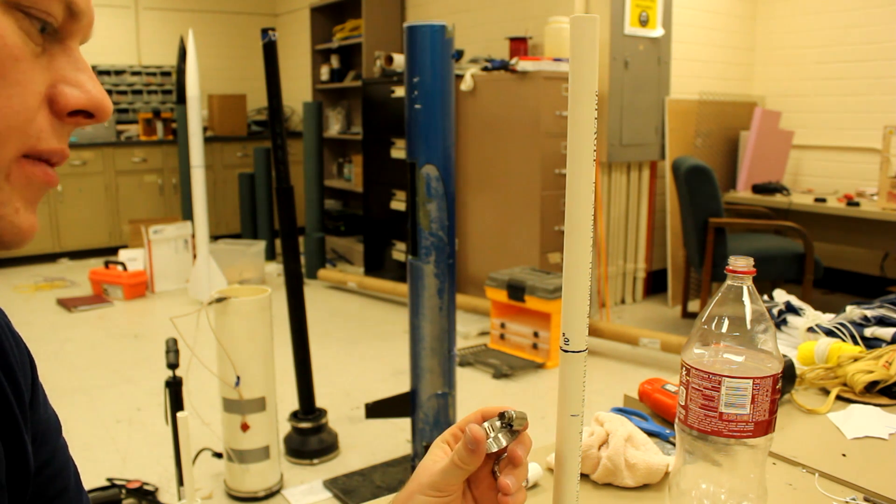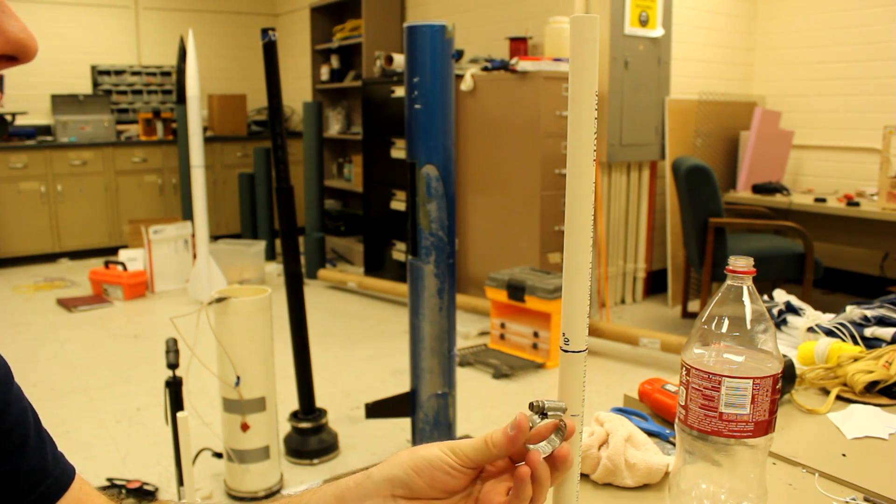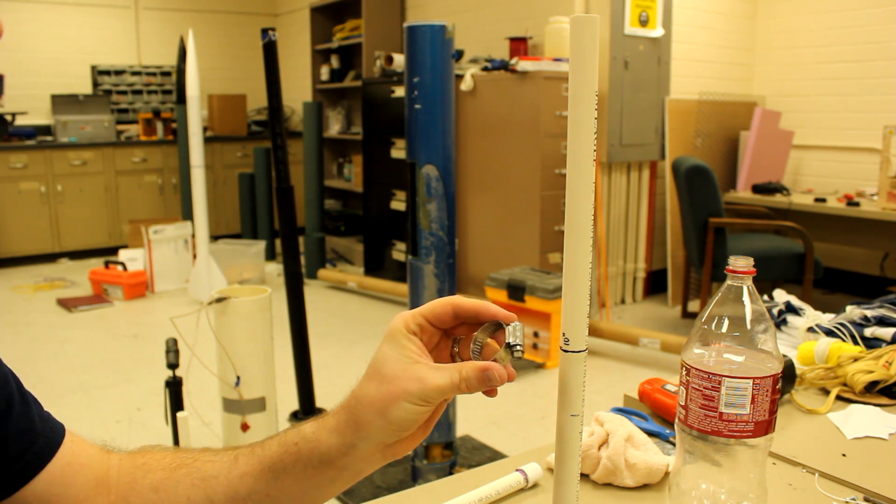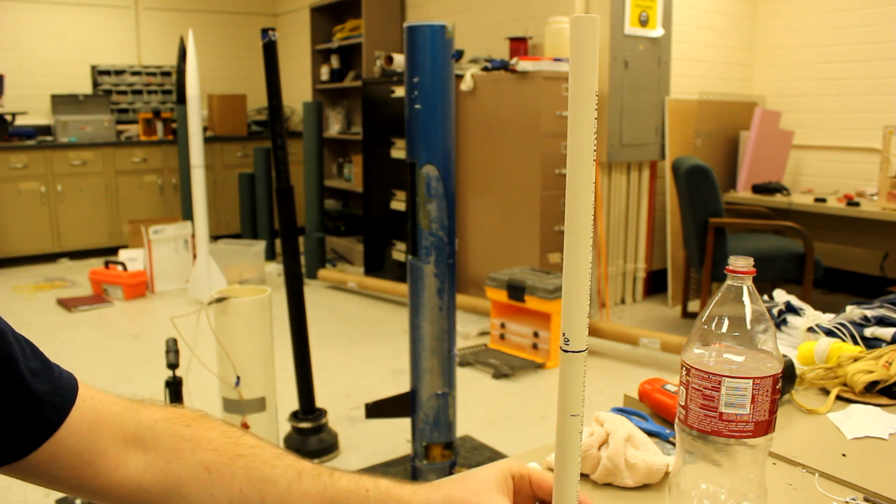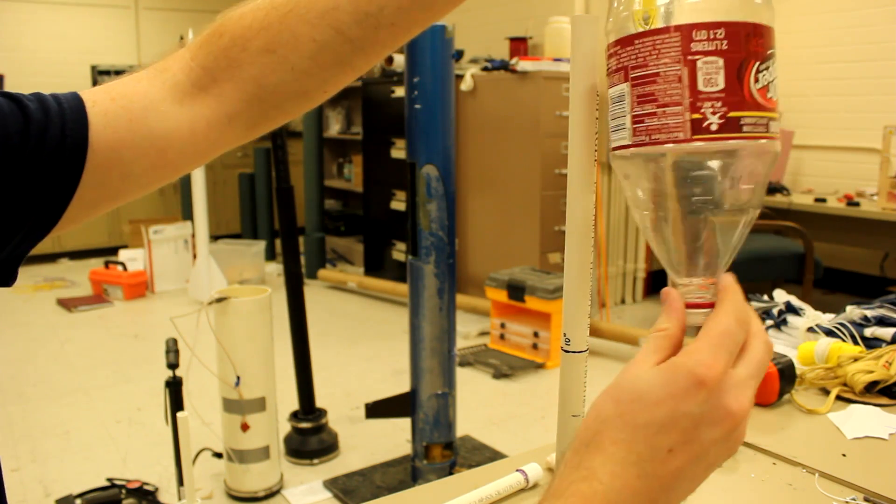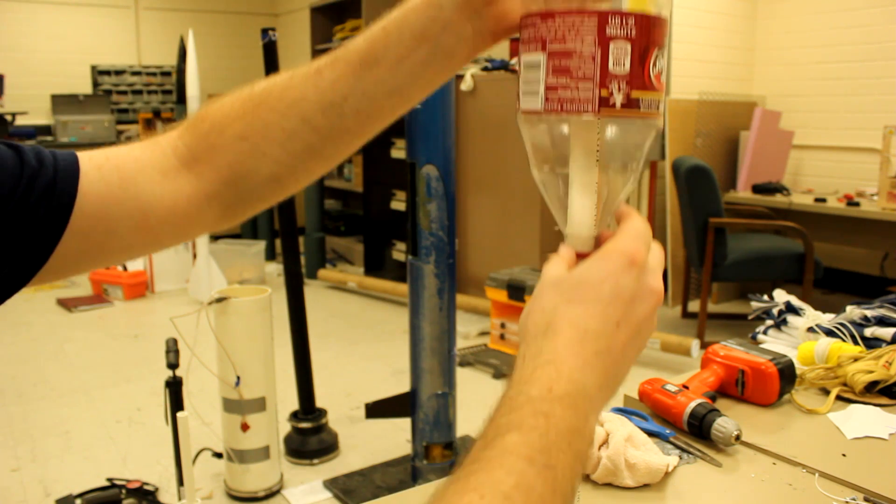Next step, before we put our zip ties on the launch rail, we're going to take this band clamp. Use your flat head screwdriver to loosen it all the way so you can slide it down on your launch rail. Then we're going to take our two liter bottle, that we'll eventually use as a rocket, and slide it over.